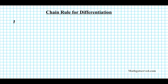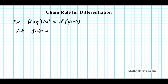For the composite function f composed with g of x, which can also be written as f of g of x, let's call the inner function g of x be u. The function that comes second in the order of composition is the inner function. This is the outer function, this is the inner function — or you can think of this as the parent function and this is the input function.